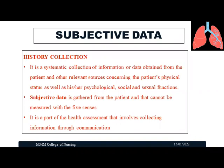In history collection there are two types of data: subjective data and objective data. Subjective data is the information given by the patient — what the patient feels or the symptoms experienced. A history collection is a systematic collection of information obtained from a patient and other relevant sources concerning the patient's physical, psychological, social, and sexual functions. Subjective data is gathered from the patient and cannot be measured with the five senses — for example, the severity of pain, which only the patient can experience.